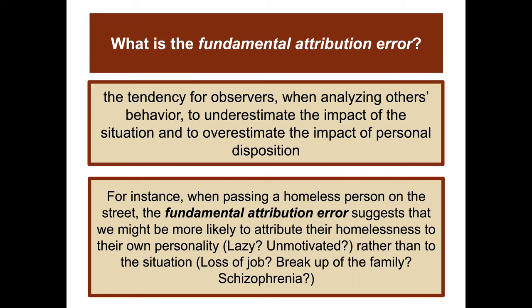From that, psychologists developed the concept of the fundamental attribution error, which is the tendency for observers, when analyzing others' behavior, to underestimate the impact of the situation and overestimate the impact of personal disposition. For instance, when passing a homeless person on the street, the fundamental attribution error suggests we might attribute their homelessness to their personality rather than situational factors like job loss, a family breakup, or a serious mental disorder like schizophrenia.